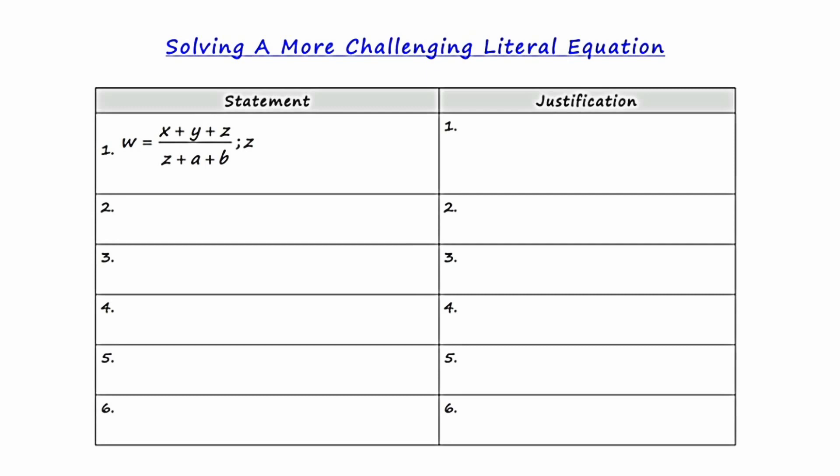So this is kind of a tough one. I've set this up like a two column proof, like from geometry. I'm going to put all my statements on the left, and I'm going to justify all of those statements with justifications on the right. So to start, I'm going to put as my first justification given, much like you would do in a two column proof.